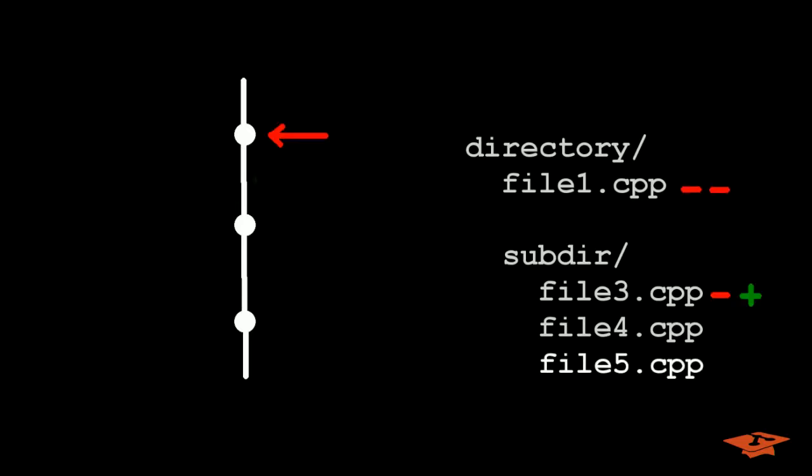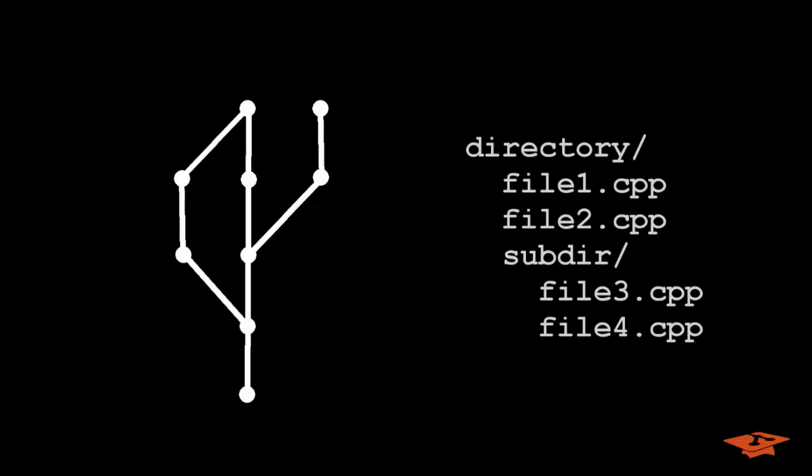Commits simultaneously represent a set of changes to files in that instant. Parental relationships define when commits were made relative to other commits and fully define the structure of the tree. This commit has one parent and this commit has two parents.